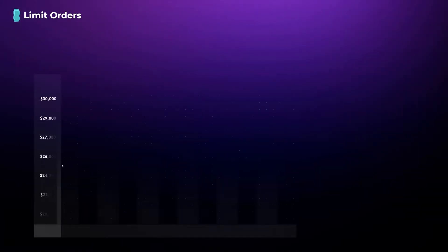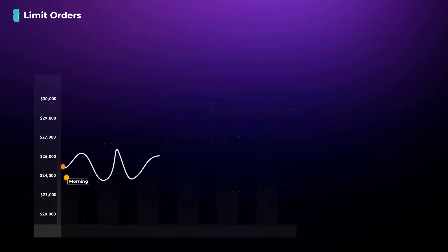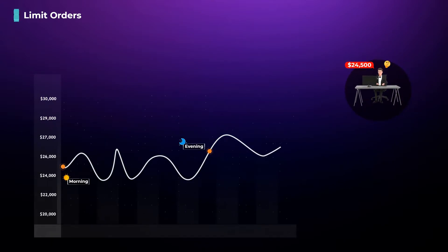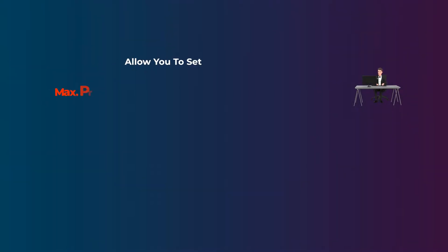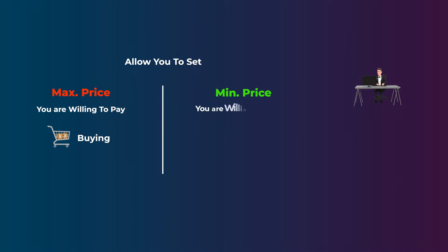Now let's get to limit orders. We know that crypto prices move all day — for example, in the morning the price of bitcoin may be $25,000 and in the evening it may be $26,500. So what if you want to buy bitcoin at $24,500 but you don't want to keep an eye on the market all the time? Limit orders allow you to easily do this. A limit order lets you set the maximum price you are willing to pay when buying, or the minimum price you are willing to accept when selling. This maximum or minimum price is called the limit price.